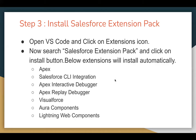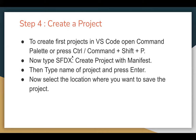Now moving to step number four: how we can create a project with Visual Studio Code. You need to open the command palette by pressing Control+Shift+P on Windows or Command+Shift+P on Mac. Then type SFDX: Create Project with Manifest. Then type the name of the project and press enter. It will ask you to select the location where you want to save the project, and your project will be created.